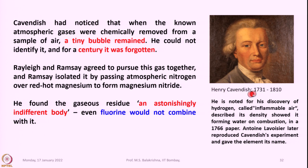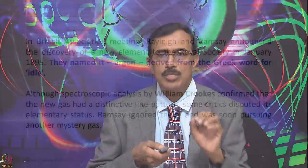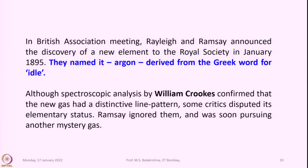Henry Cavendish is noted for his discovery of hydrogen, called inflammable air — he described its density and showed it forming water on combustion in a 1766 paper. Antoine Lavoisier later reproduced Cavendish's experiments and gave the element its name. In a British Association meeting, both Rayleigh and Ramsey announced the discovery of the new element to the Royal Society in January 1895.